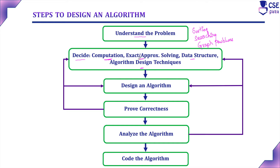Next is exact versus approximate problem solving. Problems that solve exactly and give exact output are called exact algorithms. Problems that solve only approximately are called approximate algorithms. For example, square root, integral, and nonlinear equations can be solved only approximately, and these approximate algorithms may run slow because of problem complexity. So for a given problem, we need to decide whether it will produce exact or approximate output.